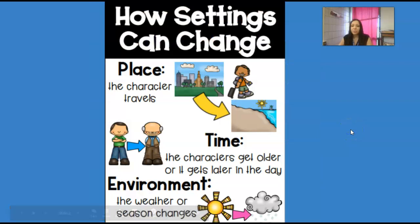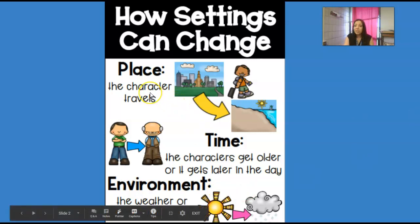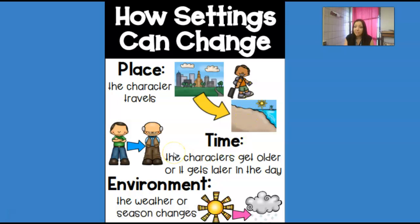In this book, we're going to talk about how settings can change. We learned that the setting is where the story takes place, but it doesn't always have to stay in one place. You might be reading a book where somebody is at school, but then they go home and the setting totally changes. A character can travel to different places, time can change, characters can get older or it can get later in the day, and the environment — the weather or the season — can change. There are many ways that a setting can change, and this book changes settings a lot.